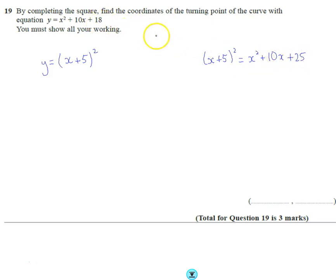I only want plus 18 in the end, so this is going to give me plus 25, so I'm going to have to subtract 7 from this to get me back to 18. So that's the completed square form.